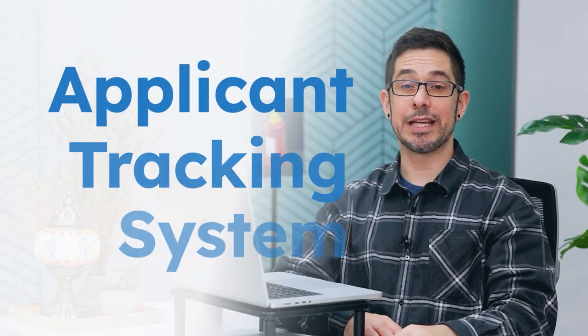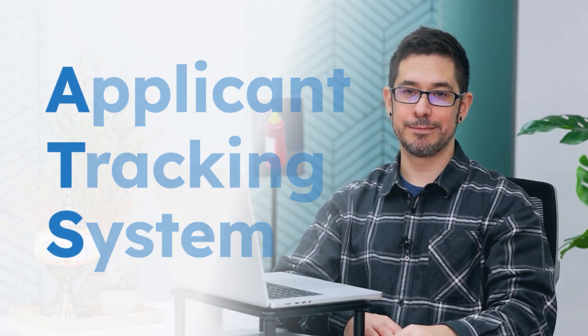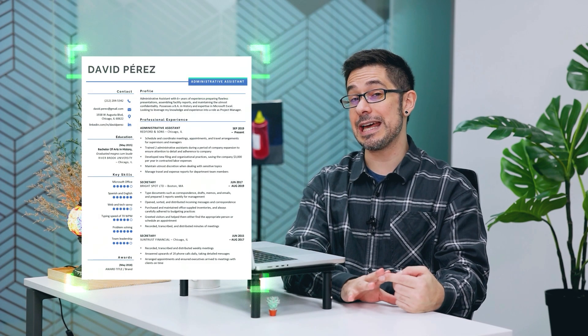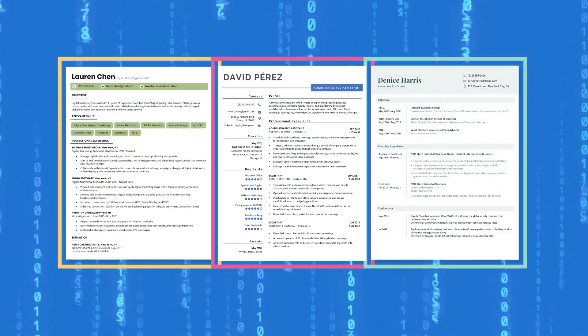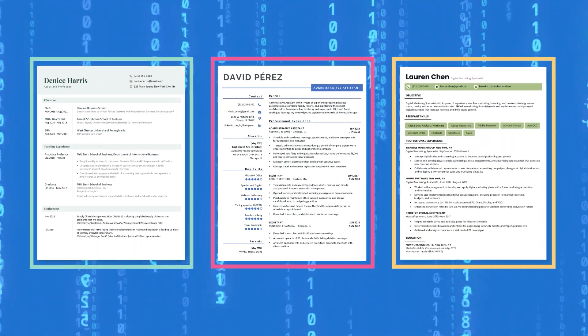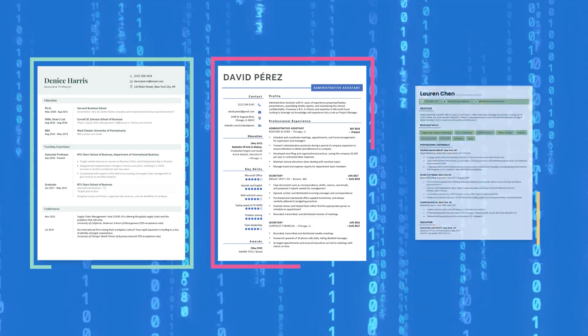ATS — Applicant Tracking System. Large companies use ATS software to manage every step of the recruiting process. It can scan, sort, and rank resumes based on certain keywords and qualifications.